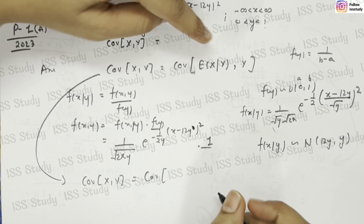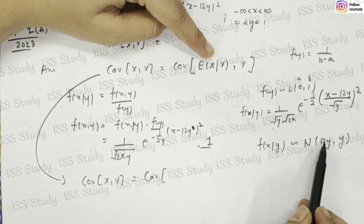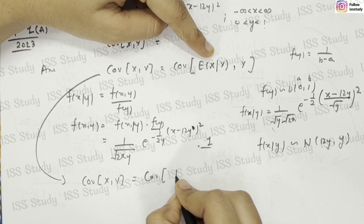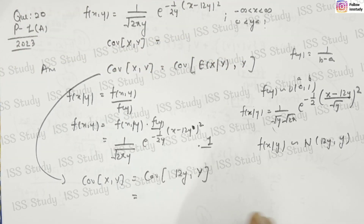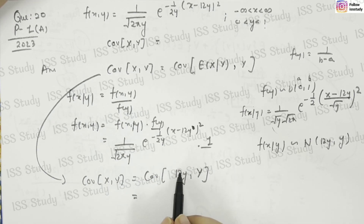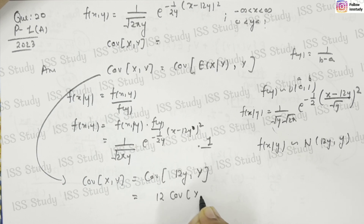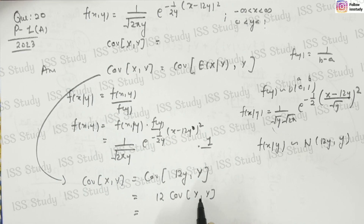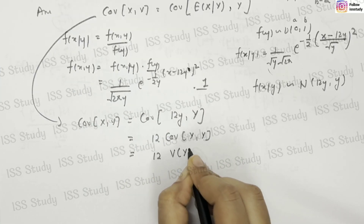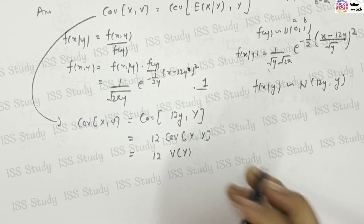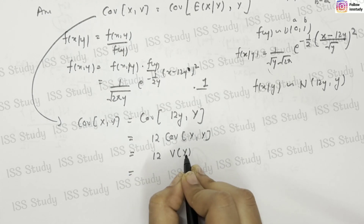Now I am going to apply the formula: Cov(X,Y) = Cov(E[X|Y], Y). The expectation of x given y is 12y, so I write Cov(12y, y). Since 12 is a constant, I can take it outside, giving 12 times Cov(y, y). Using the property of covariance where we have the same random variable, Cov(y,y) equals Var(y).